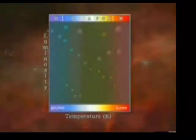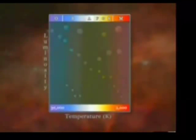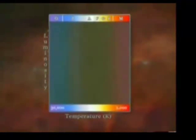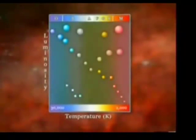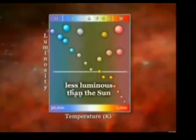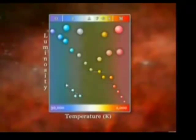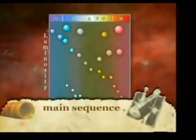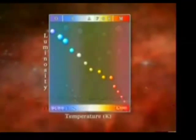A star's spectral classification is determined by temperature. This relationship is reflected in the diagram's upper and lower scales. The location of a star on the HR diagram tells astronomers quite a bit about it. Stars more luminous than the Sun are plotted in the upper half of the diagram, and those less luminous in the lower half. Knowing the star's luminosity combined with its temperature, astronomers can plot it on the diagram and determine the star's diameter. 90% of all stars plot along a main axis known as the main sequence. Stars that fall on this portion of the HR diagram are stable, burning hydrogen in their cores like our Sun.